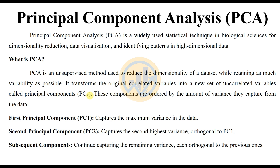PCA transforms the original correlated values into a new set of uncorrelated variables called principal components. Those components are ordered by the amount of variation they capture from the data. The first principal component captures the maximum variation in the data. The second principal component, PC2, captures the second highest variation, orthogonal to PC1. Subsequent components continue capturing the remaining variation, each orthogonal to the previous ones.